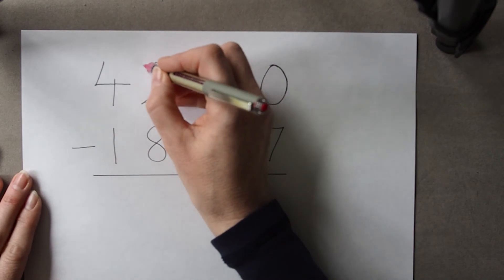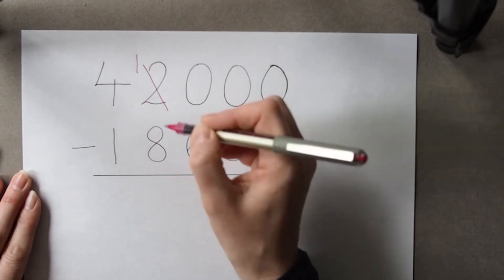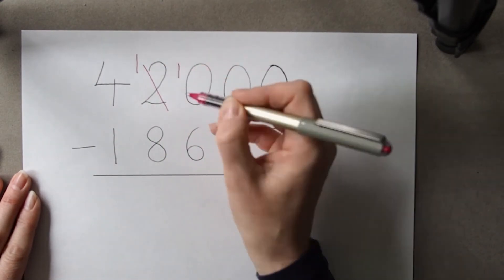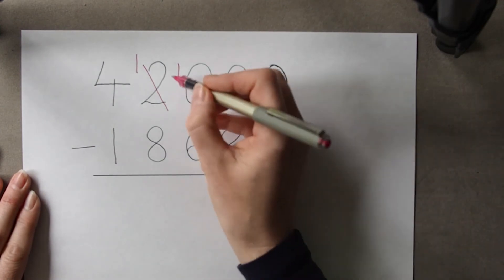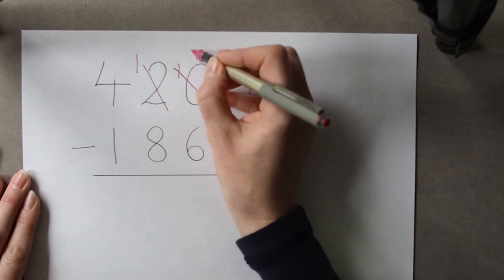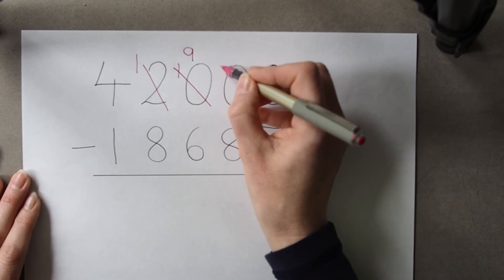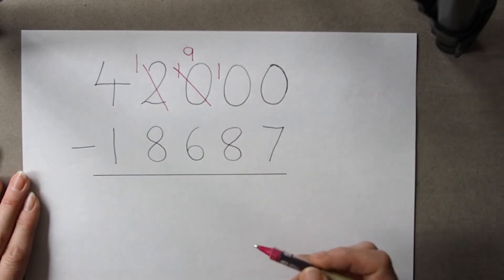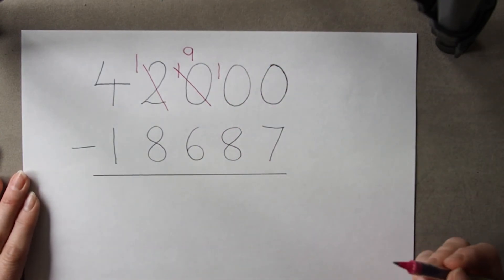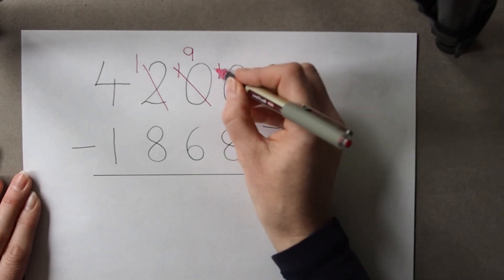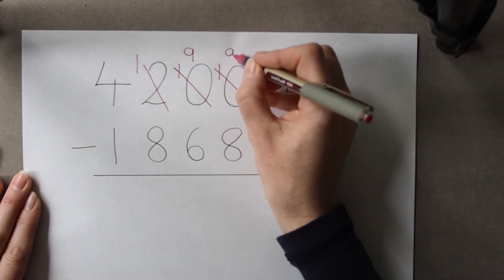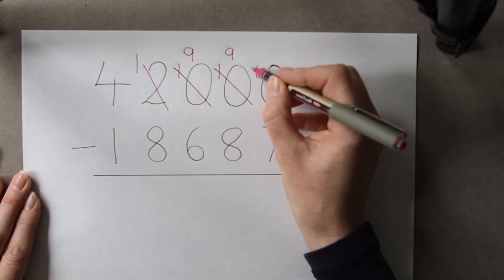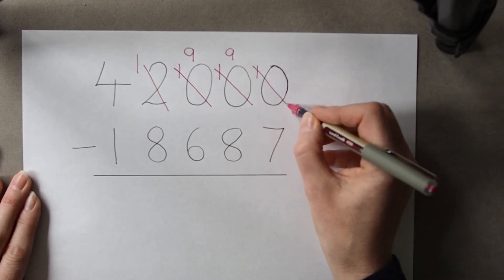So when we get to the two, we exchange that one and drop it into the next column. Take one out, it becomes a nine, we exchange that and drop it into the next column. But because with lots of zeros this can be quite repetitive, pupils can get carried away and keep going right beyond the place where they should stop.